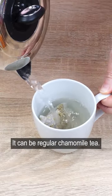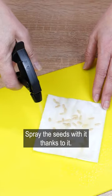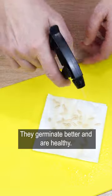Brew chamomile. It can be regular chamomile tea. When it cools down, spray the seeds with it. Thanks to it, the seeds don't rot. They germinate better and are healthy.